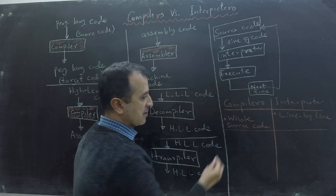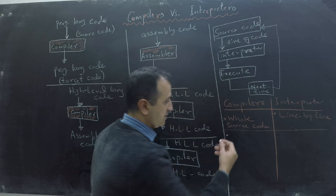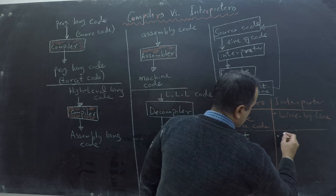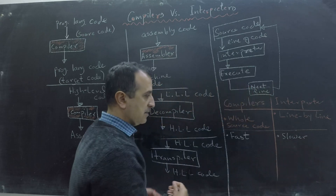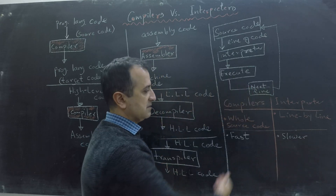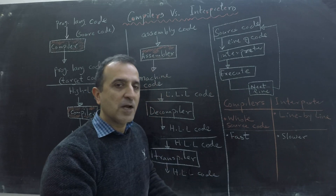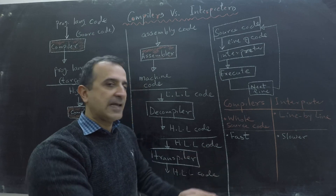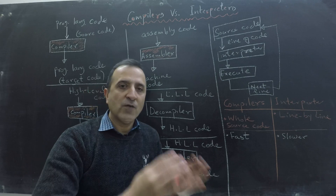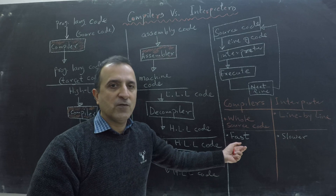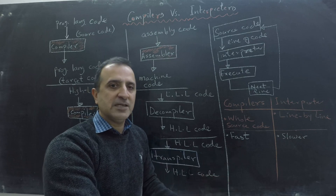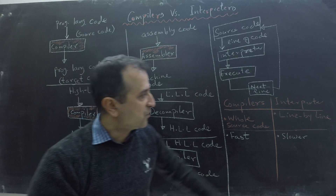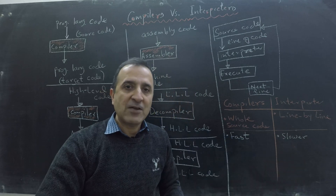Secondly, compilers are significantly faster — many times faster compared to an interpreter. The execution of code is faster when it has been translated into low-level language, compared to taking a line of code, executing it, then taking another line and executing it. With a compiler, we don't have that overhead. We have a compile time which is done once, and then the same code can be executed multiple times without any overhead. Whereas with an interpreter, we have to interpret the code every time we want to execute it.